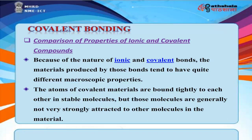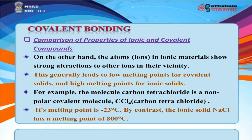Because of the nature of ionic and covalent bonds, the materials produced tend to have quite different macroscopic properties. Atoms of covalent materials are bound tightly to each other in stable molecules, but those molecules are generally not strongly attracted to other molecules. Ions in ionic materials show strong attraction to other ions in their vicinity. This generally leads to low melting points for covalent solids and high melting points for ionic solids. For example, carbon tetrachloride (CCl₄) has a melting point of -23°C, while the ionic solid NaCl has a melting point of 800°C.